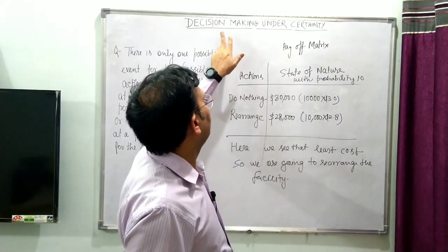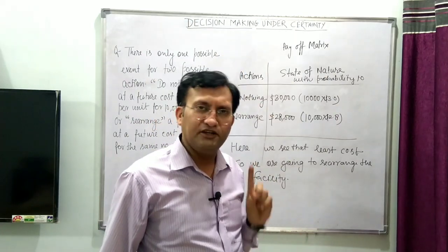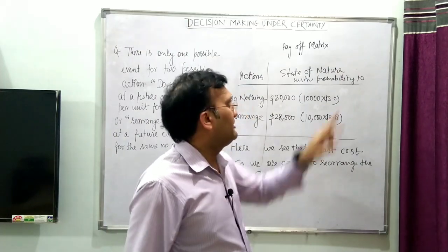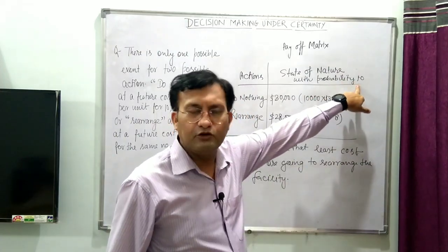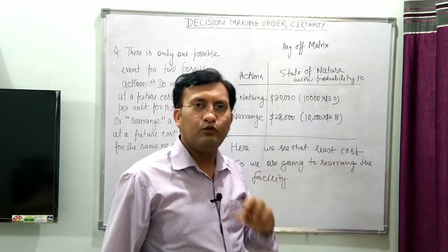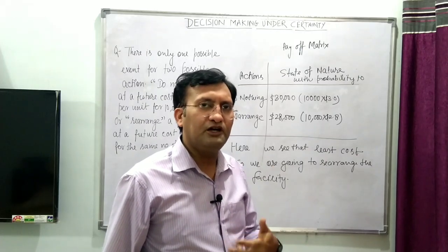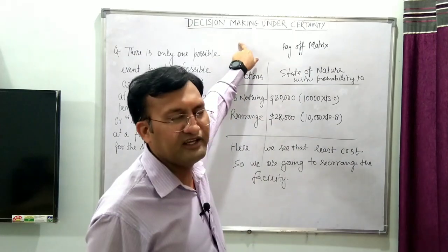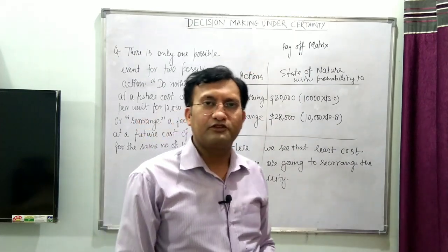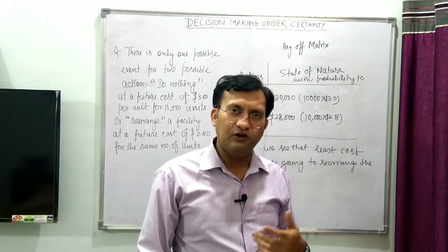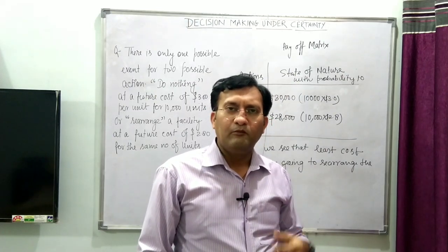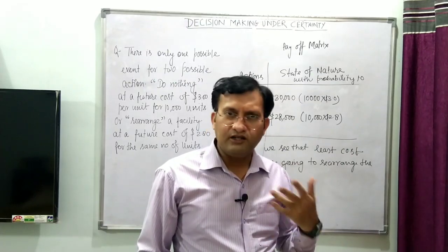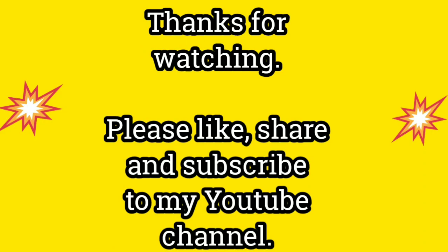This is all about decision-making under certainty. Always remember: in decision-making under certainty the probability is 1, because we always know what is going to happen — we know the occurrence. So thanks a lot for watching this video. I hope that you have liked it. Please subscribe to my channel and share this video with others so that they can also be benefited.